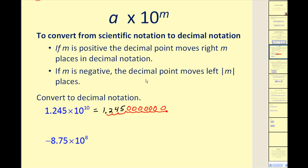Now to make it clear what our number is, we should rewrite this. So 1.245 times 10 to the 10th power is equal to 12,450,000,000.